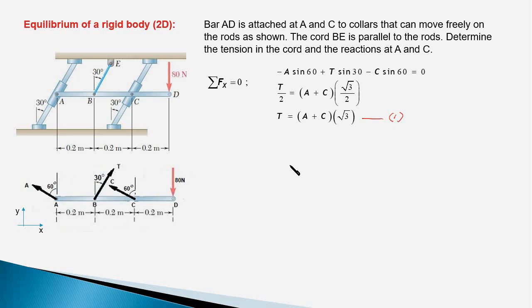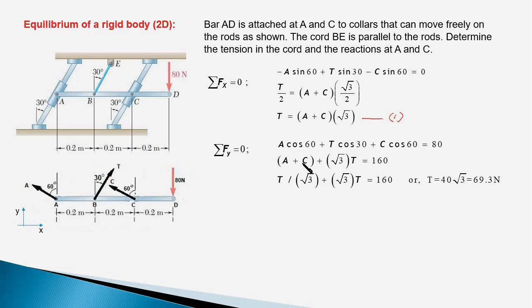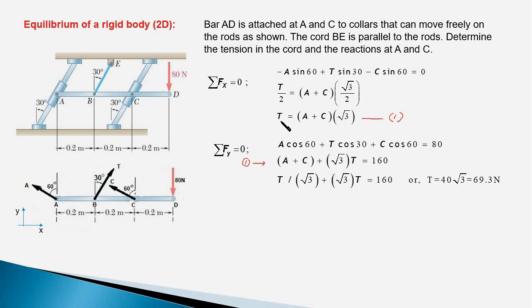The second equilibrium equation σFy = 0 gives us A cos 60° plus T cos 30° plus C cos 60° minus 80 = 0, where the 18 N force resolves appropriately. Substituting A + C = T/√3 from equation 1 into this equation and simplifying yields T/√3 + T√3 = 160, and therefore T works out to 40√3 ≈ 69.3 Newtons.